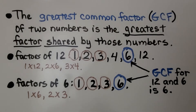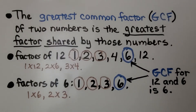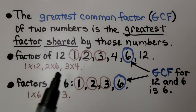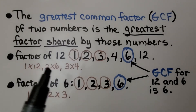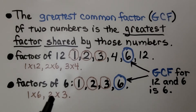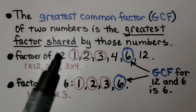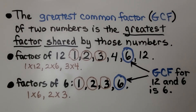The greatest common factor, or GCF, of two numbers is the greatest factor shared by those numbers. If we list the factors of 12, we have 1 times 12, 2 times 6, and 3 times 4, giving us factors 1, 2, 3, 4, 6, and 12. For 6, we have 1 times 6 and 2 times 3, giving us 1, 2, 3, and 6. The common factors are 1, 2, 3, and 6, and the greatest common factor is 6. The GCF for 12 and 6 is 6.